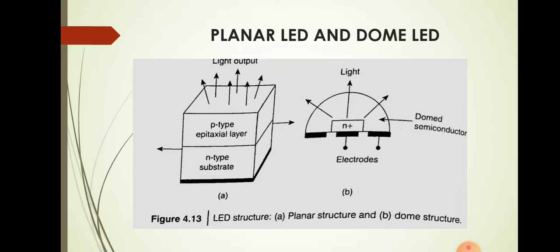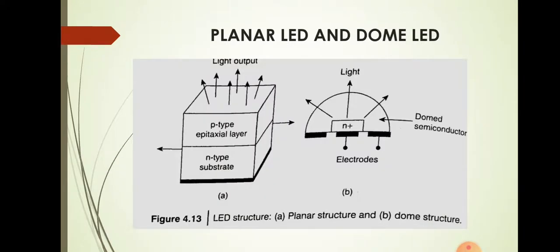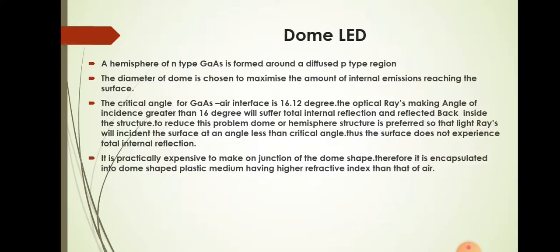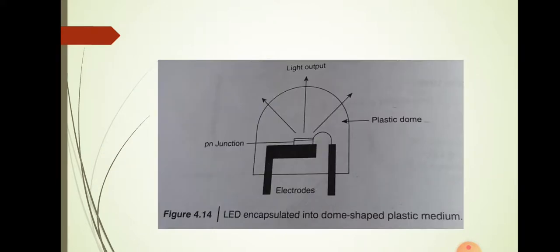The LED structure should be such that photons generated from the device are emitted without being reabsorbed. This is achieved with a thin layer of p-material. Most of the recombination takes place at the p-type material, and the LED design should be such that the photons emitted are not reabsorbed and are emitted to the outside from the p-type region. We make the thickness of the p-layer very thin so that most light is emitted out. Next is the dome-shaped LED. In planar cases, some of the emitted radiation will be reabsorbed into the material.